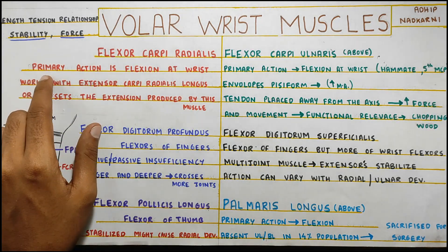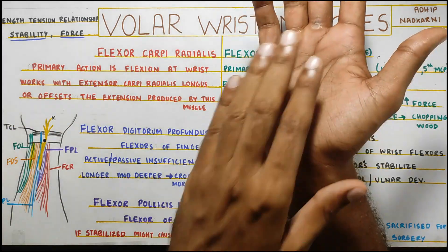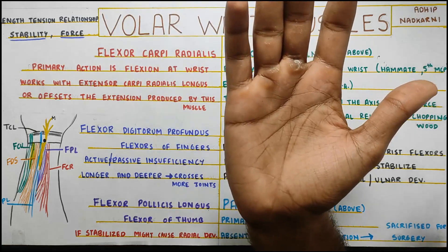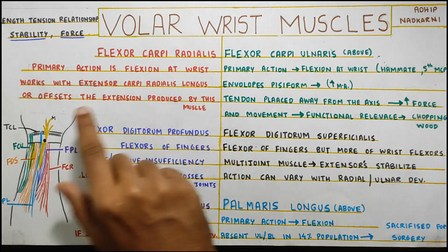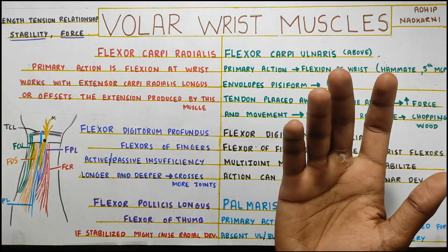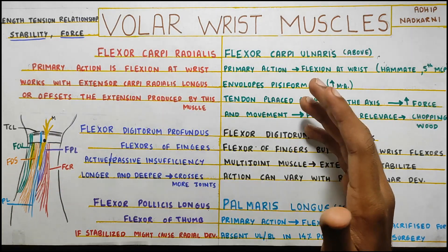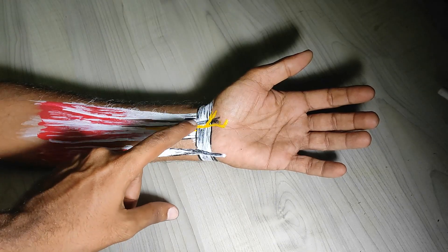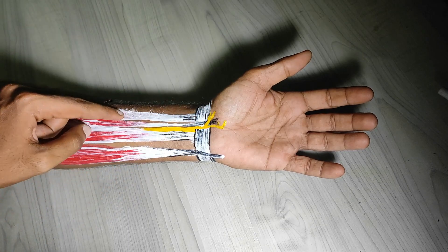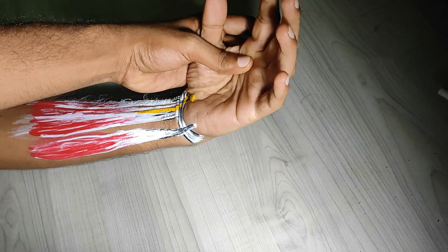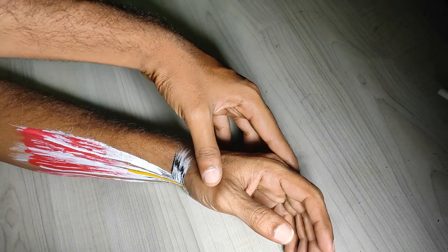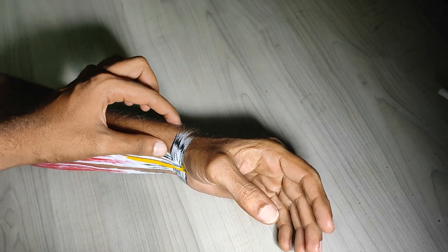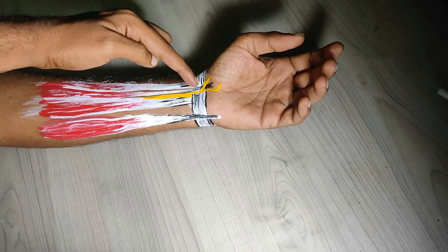Its primary action is flexion at the wrist joint, and along with flexion, it also causes radial deviation. But because it is very close to the axis, it is not very efficient at doing it. What happens is the extensor carpi radialis works with extensor carpi radialis longus to create that radial deviation — or you can say it offsets the extension produced by the muscle. The flexor carpi radialis creates wrist flexion and radial deviation toward the thumb, and the extensor creates extension and radial deviation. Both cancel out and a pure radial deviation movement is seen.